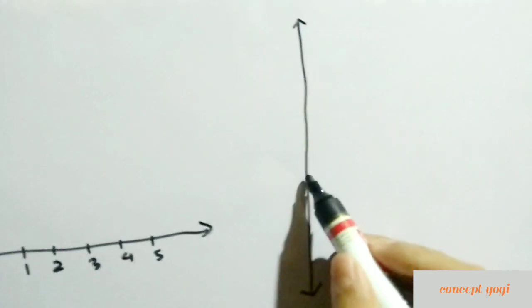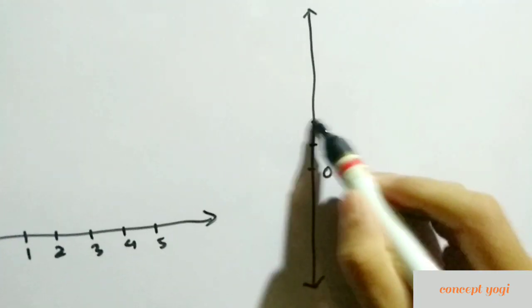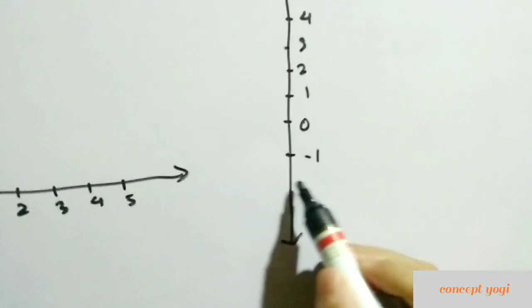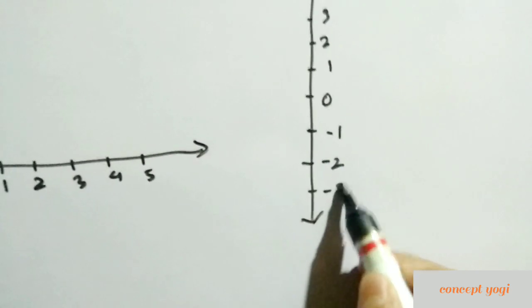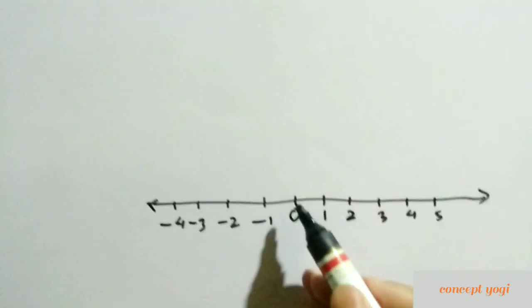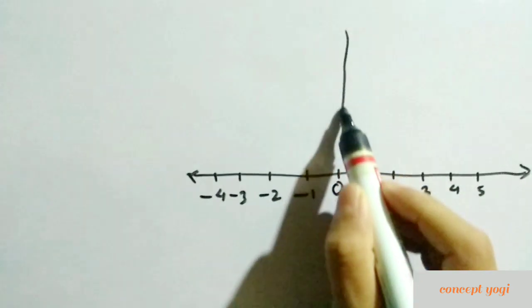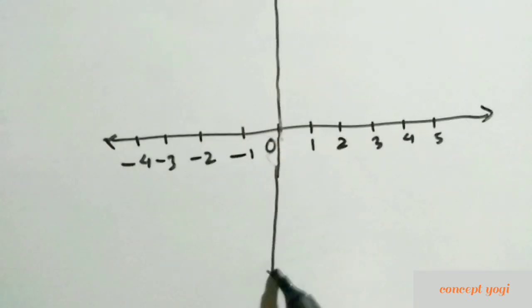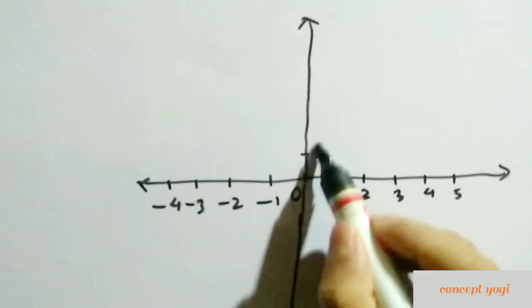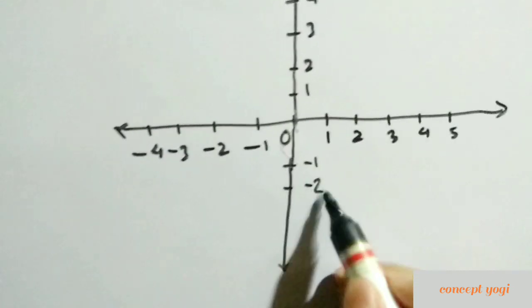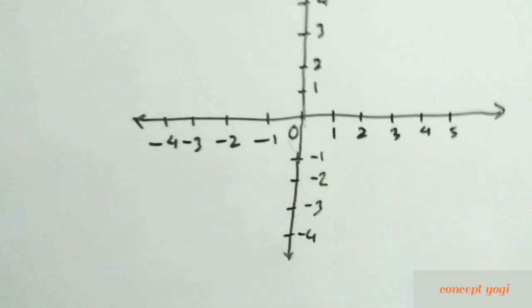Now we'll take another number line — a vertical one. Positive numbers go upward: one, two, three, four, five, and so on. Negative numbers go downward: minus one, minus two, minus three, and so on. Now we'll combine the two lines such that they cross each other at point O. On the horizontal direction we have one, two, three, four, five going right, and minus one, minus two, minus three, minus four going left.